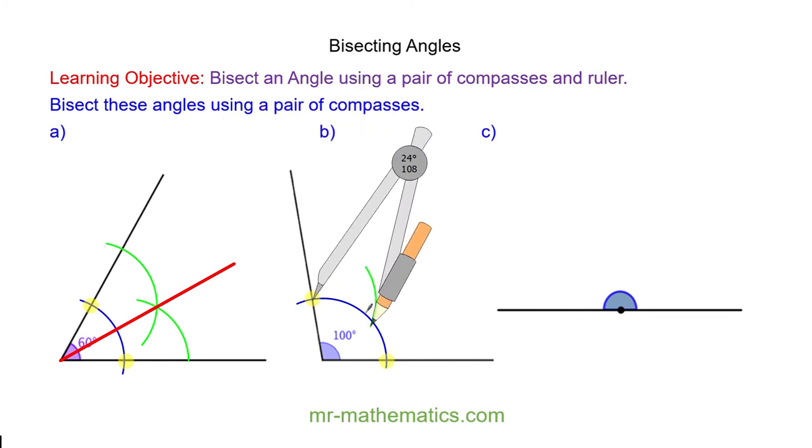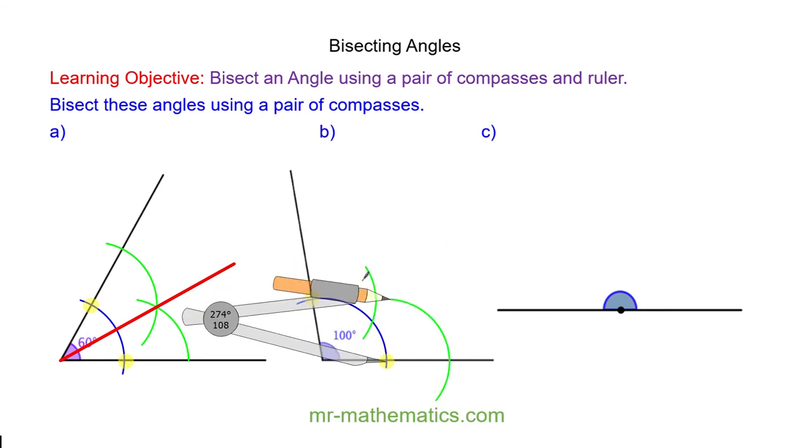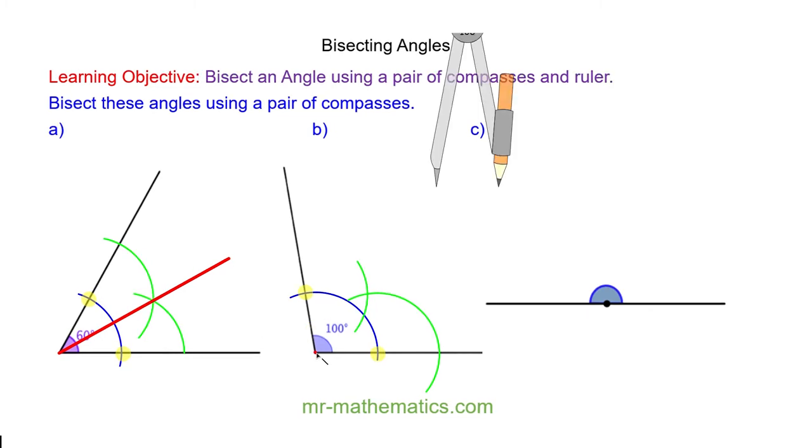So here is one arc and here is the second arc. And finally I draw a line from the angle through the two green arcs.